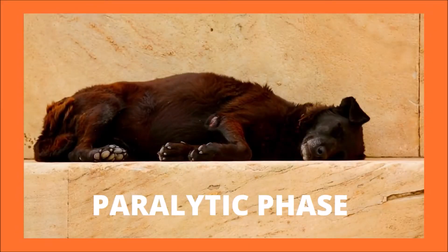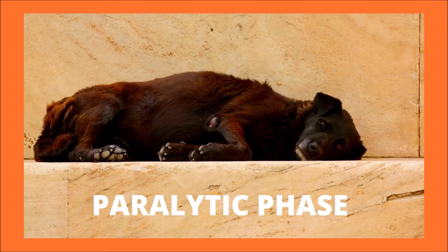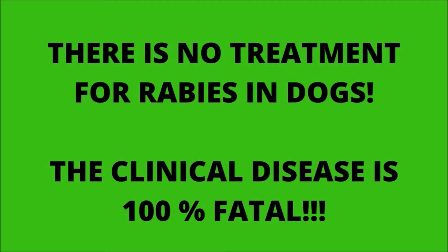During the dumb phase, progressive paralysis will limit the dog's ability to move. Saliva often drips continually out of the mouth. Eventually the dog will become completely paralyzed and comatose and will die. For dogs exposed to the rabies virus, there is no treatment for clinical disease.